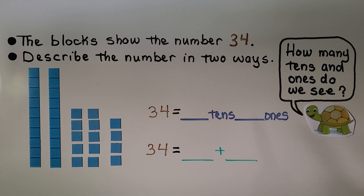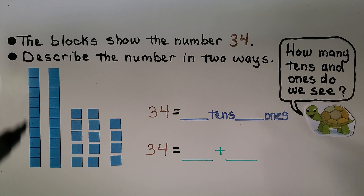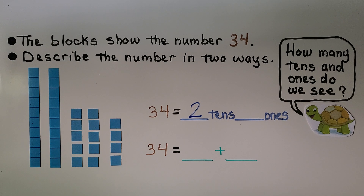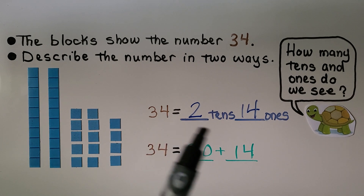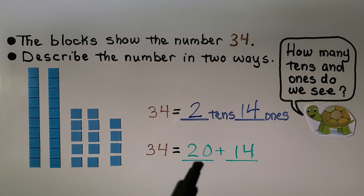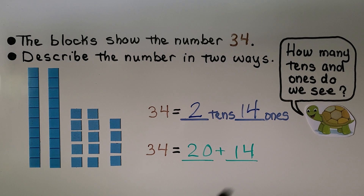The blocks show the number 34. We need to describe the number in two ways. How many tens and ones do we see? I see two strips of tens, and I see 14 ones. Two tens and 14 ones is 34. And 34 is 20 — that's the two tens — plus 14, that's the 14 ones.